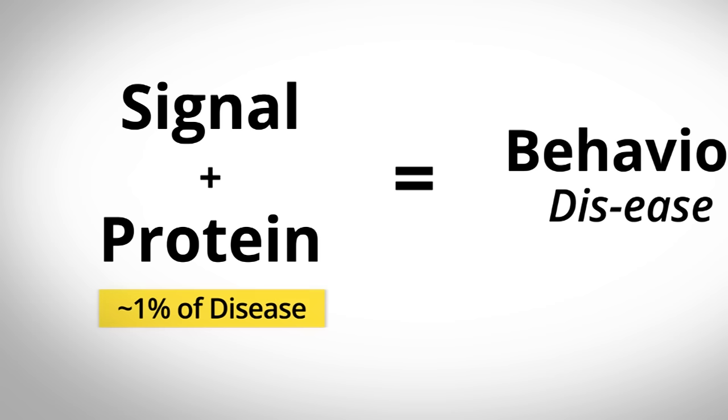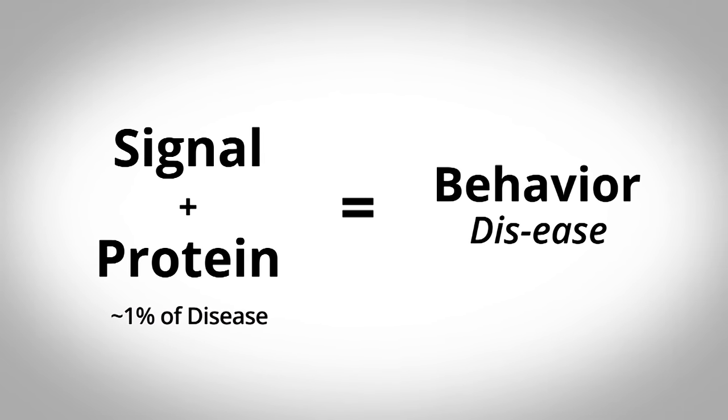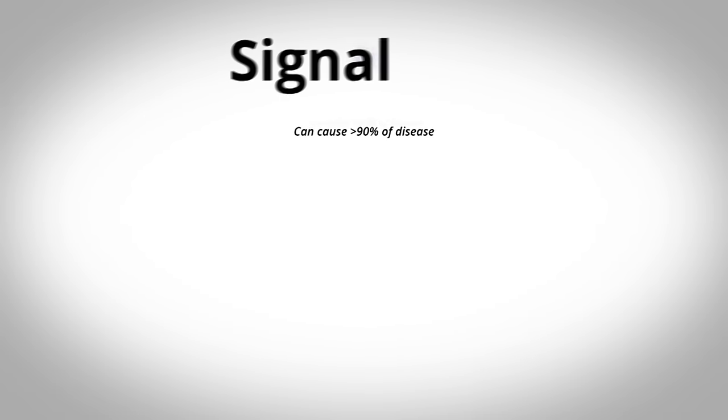Now we're down to a very simple understanding. If only 1% of disease is related to proteins, then the other cause of disease must be some alteration in the signal.